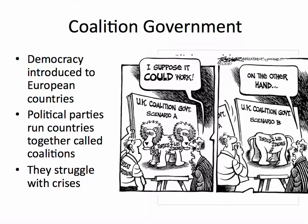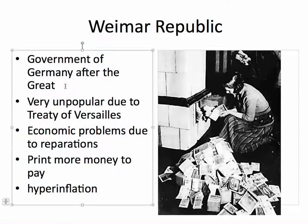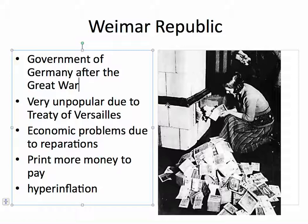The German government was called the Weimar Republic, and this was the government of Germany after the Great War. They were very unpopular due to the Treaty of Versailles, and they had major problems due to reparations. Remember, reparations was money that you had to pay back to France and Great Britain. And the way they dealt with their money problems, because they didn't have enough money, was they would print more money.